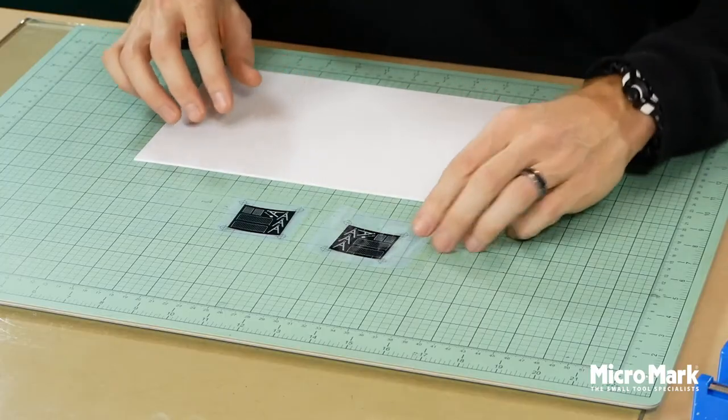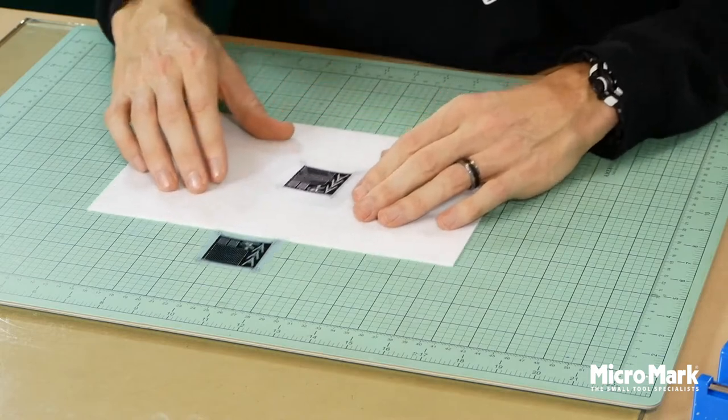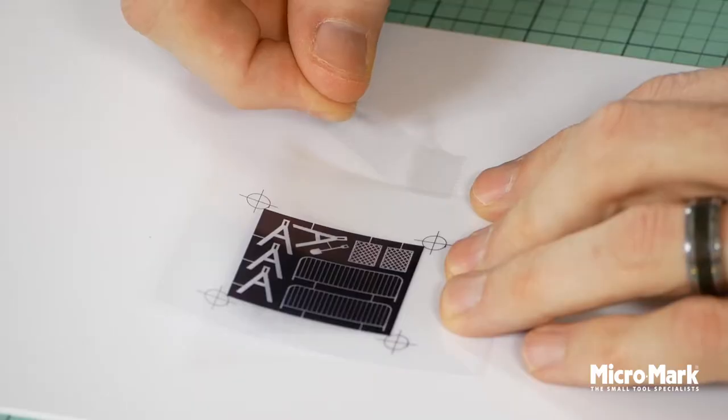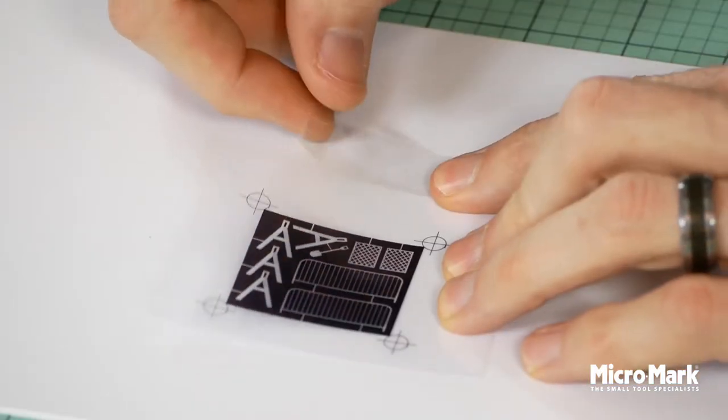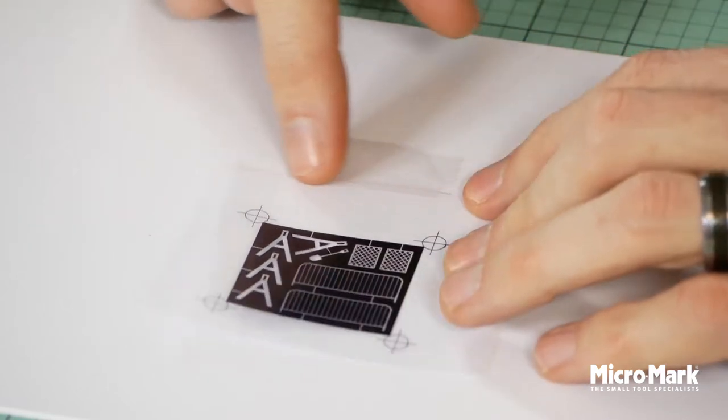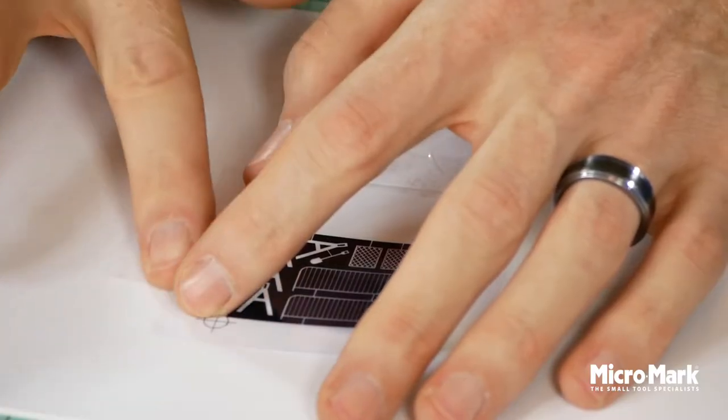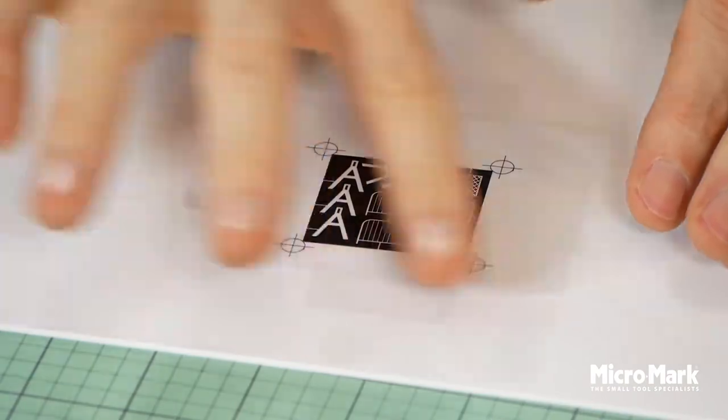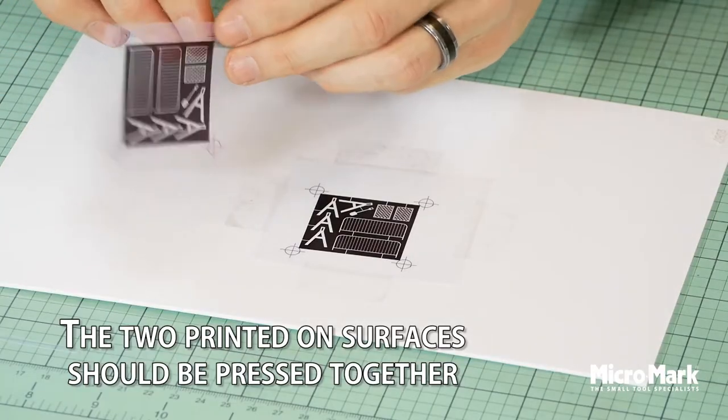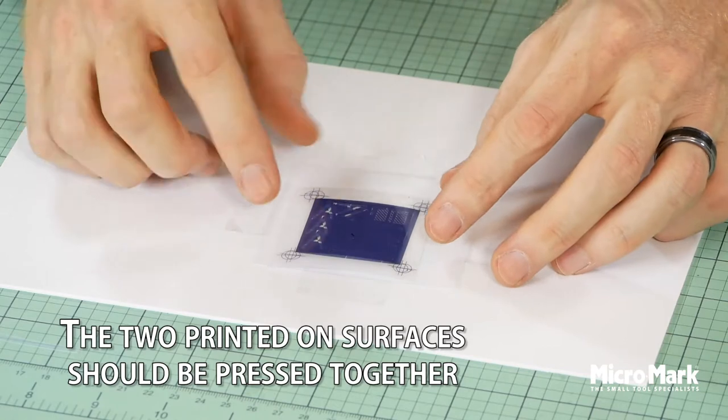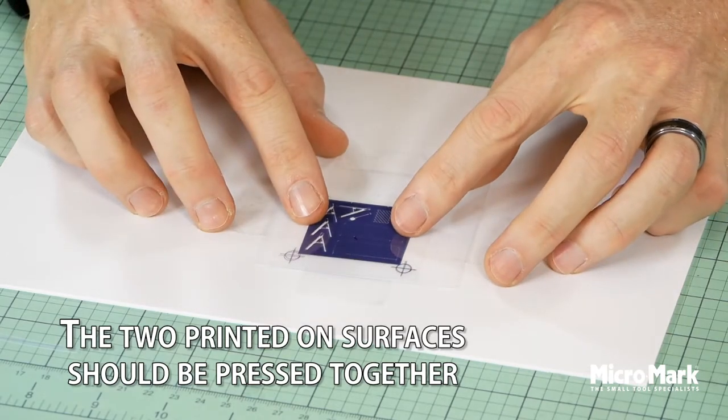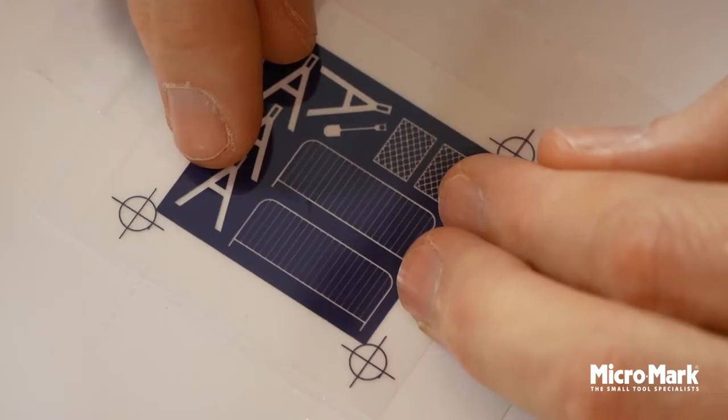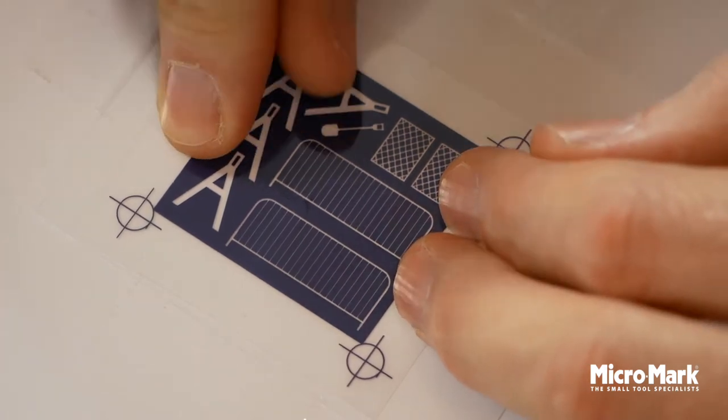It's easier to register the templates by first taping the bottom sheet to something white. In the Pro Etch kit you'll have a sheet of white styrene that does a perfect job for this. Just make sure the ink side is facing up on the bottom sheet and with the top sheet make sure the ink side of the sheet is facing down and line it up with the bottom sheet. Take your time lining them up. The closer to perfect you can get them the better your final etched piece will be.